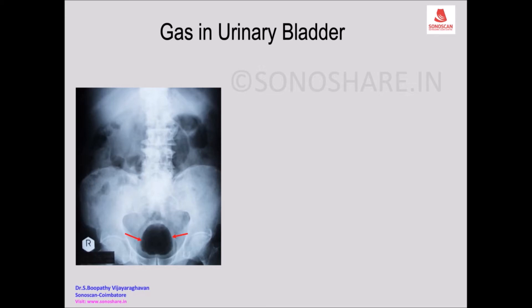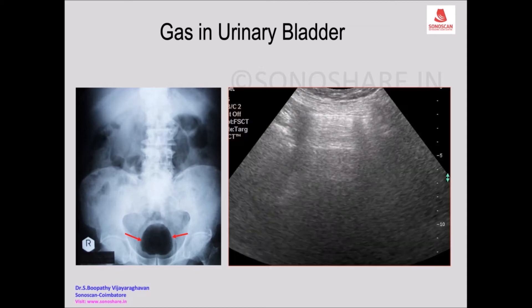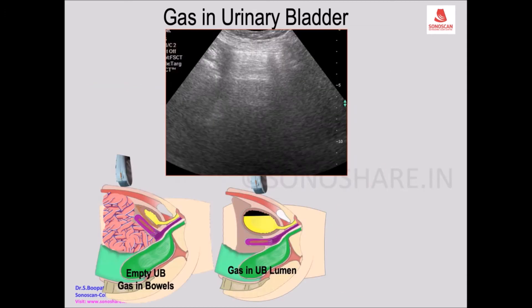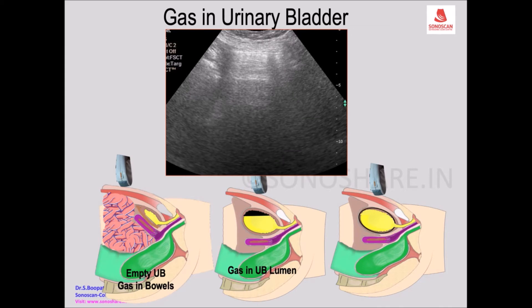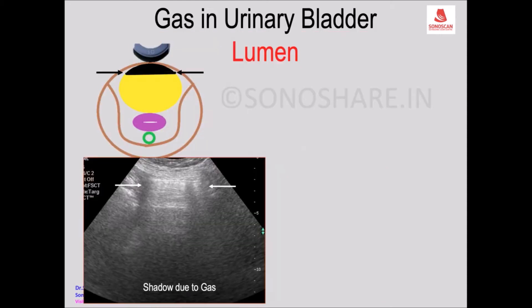There is gas within the urinary bladder, so the gas outlines the urinary bladder. Normally it will be opaque, but here it is filled with gas. When you do ultrasound in this patient, a similar appearance will be seen - gas within the wall of the urinary bladder.